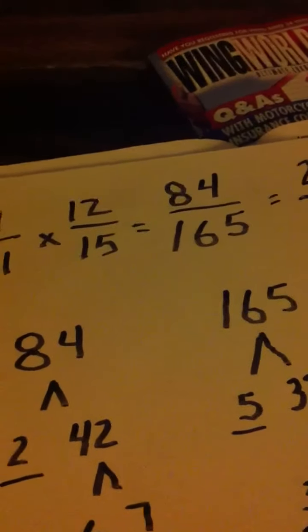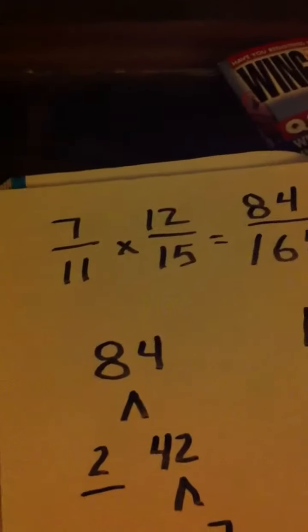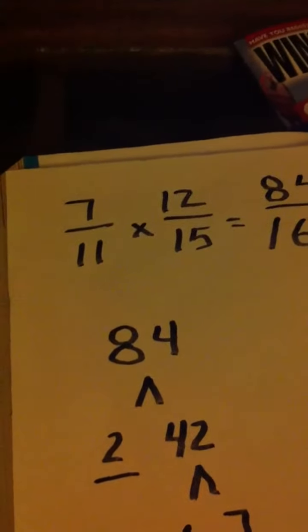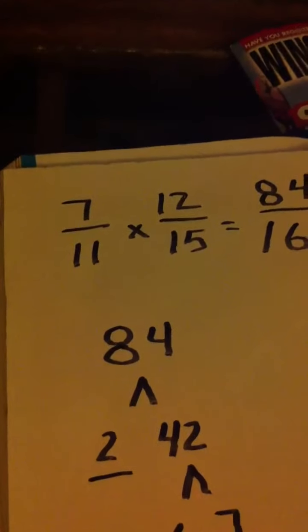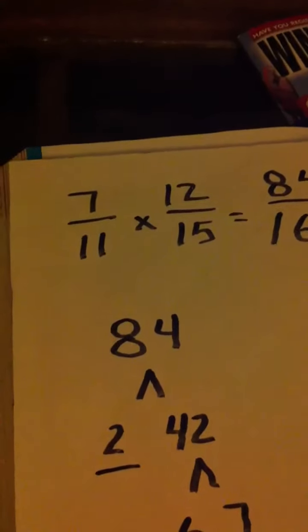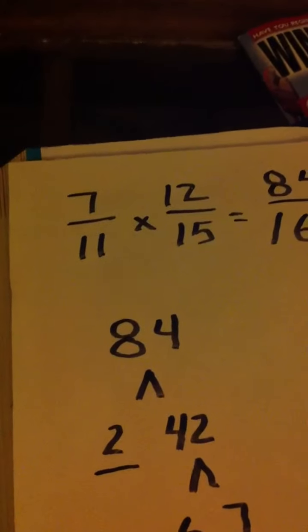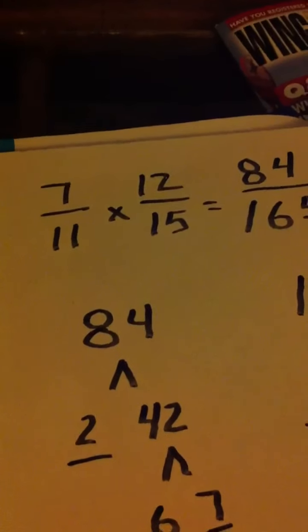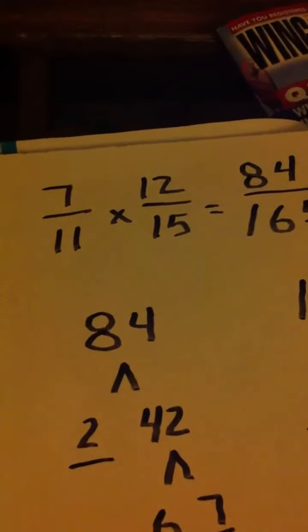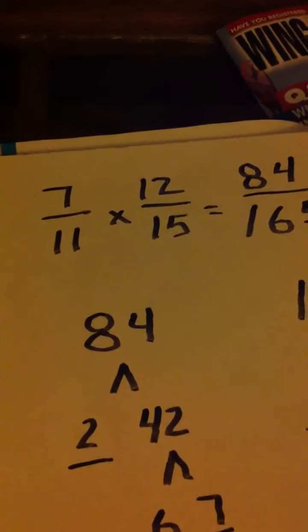But that can reduce again. The only thing I can think of is whenever you're doing your main problem, 7 11ths times 12 over 15, stop, hesitate just a second and make sure that both those fractions are in simplest form. The 12 15ths will reduce to 4 5ths if you look at it.